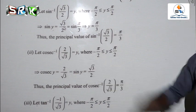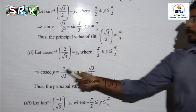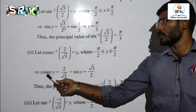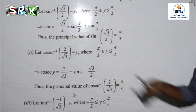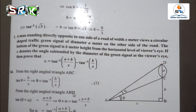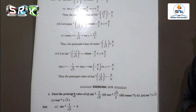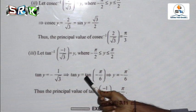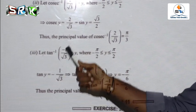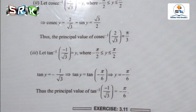Second: let cosecant⁻¹(2/√3) = y, where -π/2 ≤ y ≤ π/2. Cosecant y = 2/√3, so sin y = √3/2, which gives y = π/3. Third: tan⁻¹(-1/√3) = y gives y = -π/6, which is the solution for the principal value of that term.